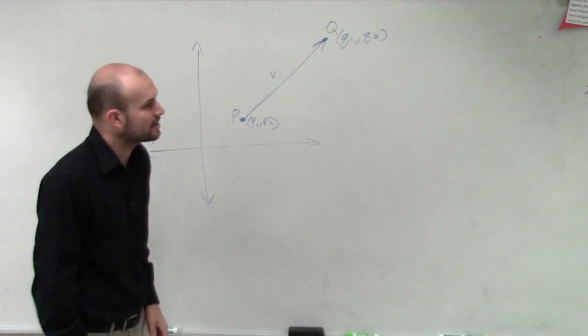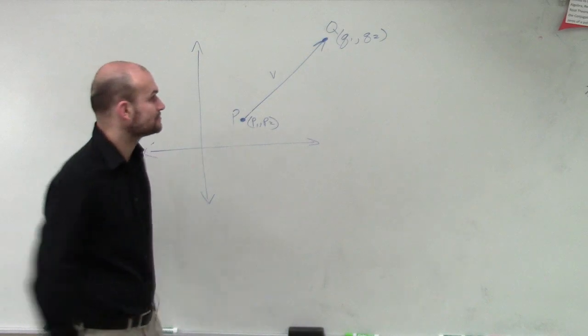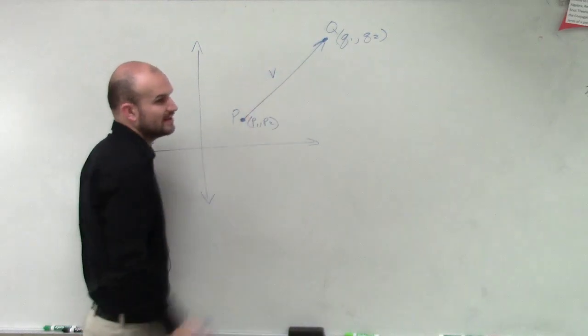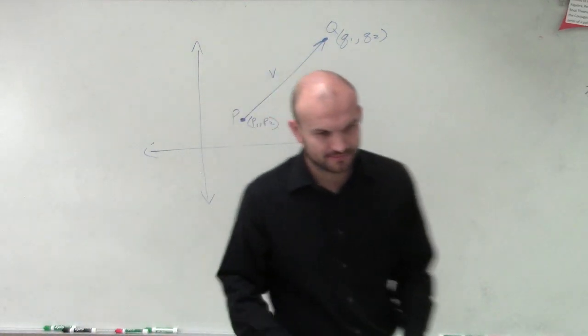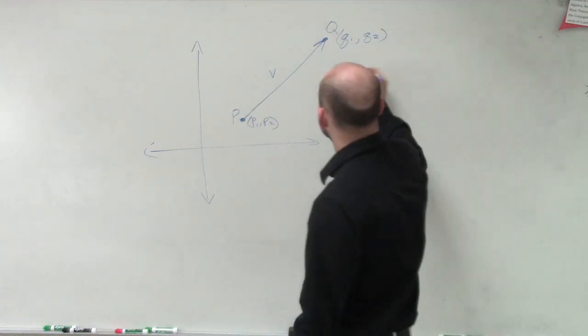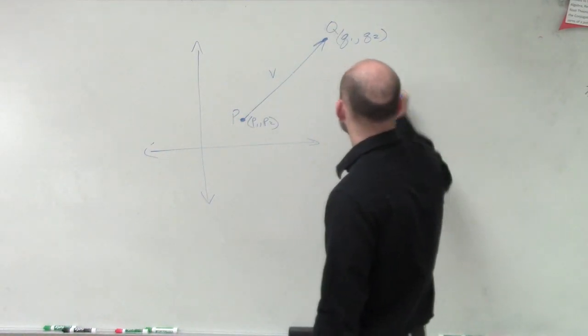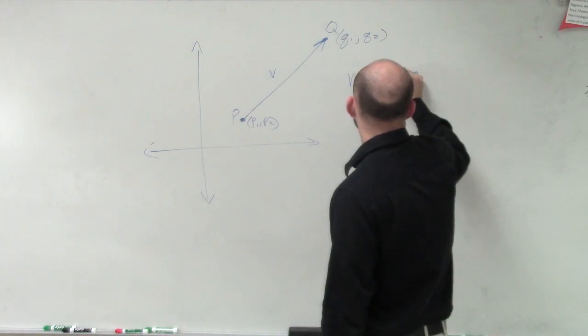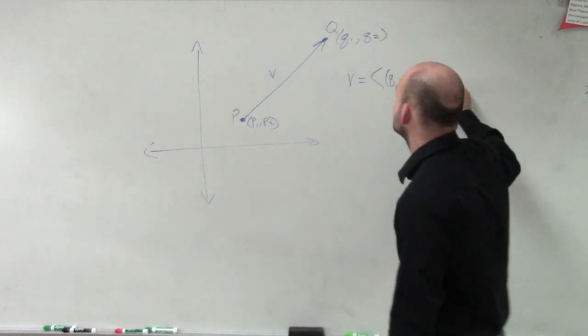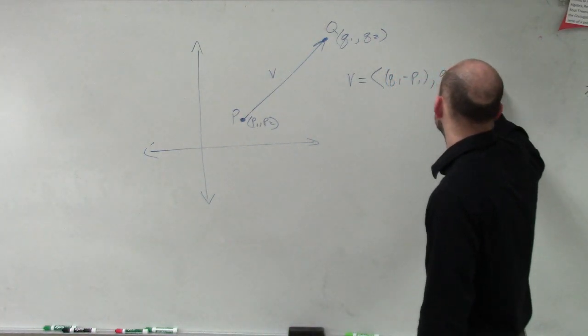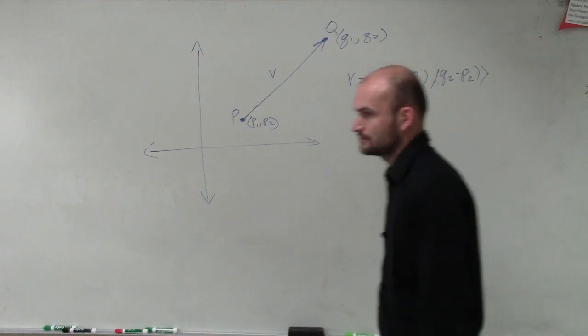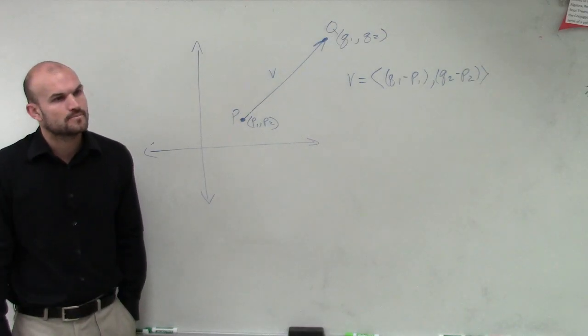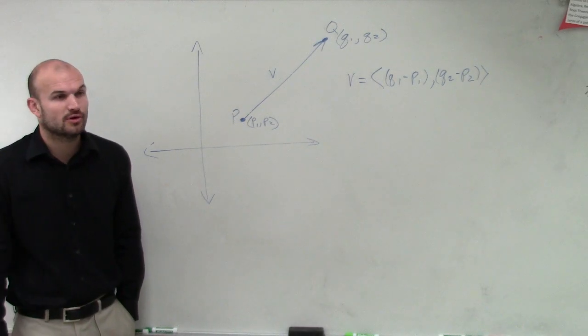So the next thing I want to work on is finding the component form of a vector. So if we're going to say the component form of a vector, we'll say vector v, the component form of a vector is going to look like this: vector v is going to be q1 minus p1 comma q2 minus p2.